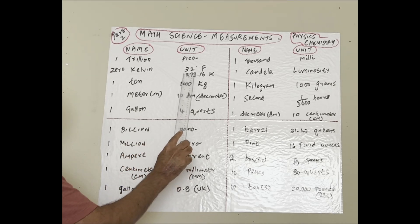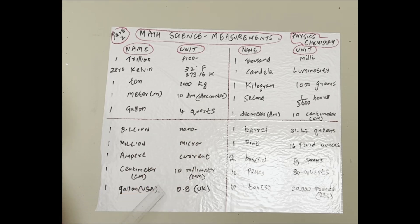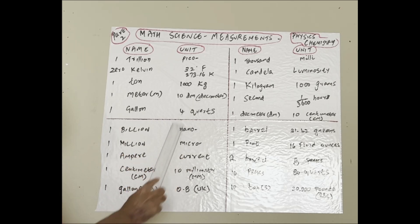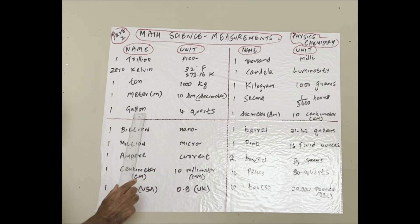One trillion is pico. Zero Kelvin: 32 degrees Fahrenheit or 273.16 Kelvin. This is widely used in physics and chemistry. One pan is 1,000 kilograms. This is used in industries for heavy goods carrying. One meter is 10 decimeters. One gallon: four quarts.